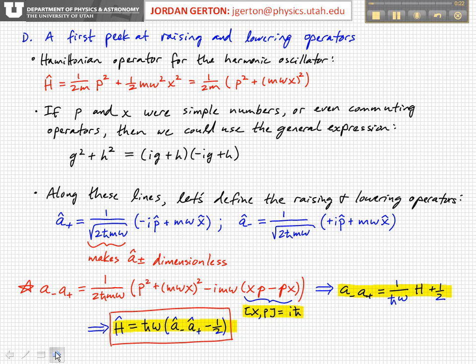Remember that we write the Hamiltonian operator like this: p squared over 2m plus one half m omega squared x squared. This is the kinetic energy term. This is the potential energy term, and we rewrite that Hamiltonian in this form.